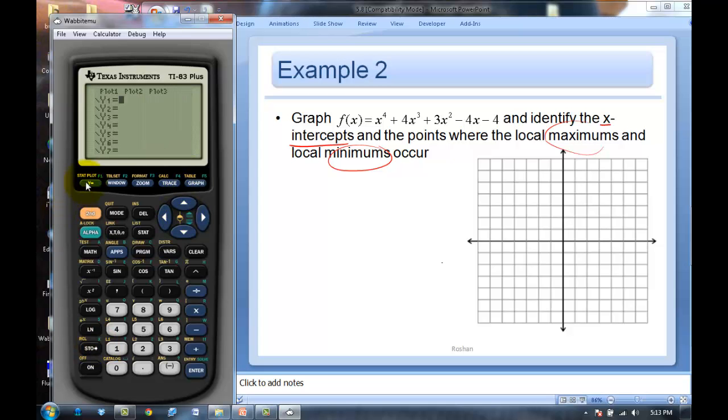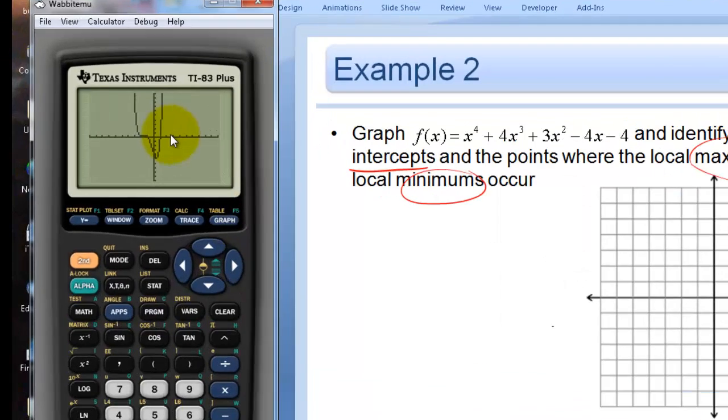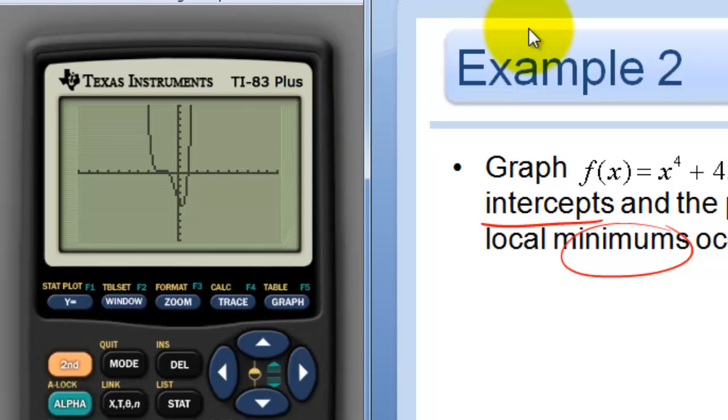So go ahead and y equals, put your equation, and then just graph it. And that looks like what we would have expected. We would have expected that the end behavior would have started up and ended up, since it's positive and the degree is even. And so that's what we were expecting.